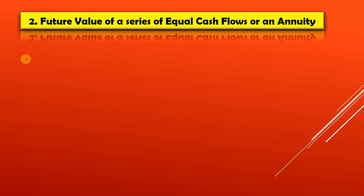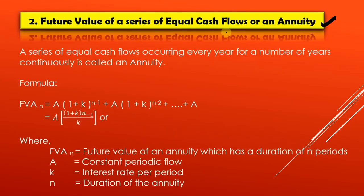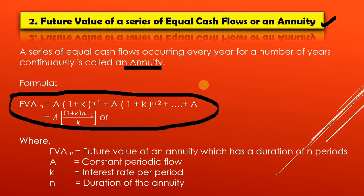Now the second head of the compounding technique: the future value of a series of equal cash flows, also called an annuity. An annuity means a series of equal cash flows occurring every year for a number of years continuously. When a series of deposits or investments is made, it is called an annuity. The formula uses FVAN for the future value of an annuity, A for the constant periodic flow, K for the interest rate, and N for the duration of the annuity.